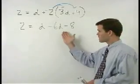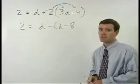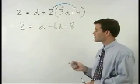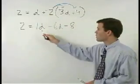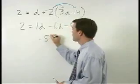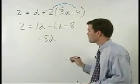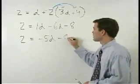Continuing to simplify on the right side, we combine d minus 6d. And remember that d can be thought of as 1d. So 1d minus 6d simplifies to negative 5d. And we have 2 equals negative 5d minus 8.